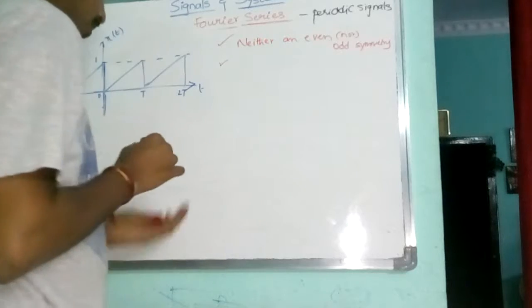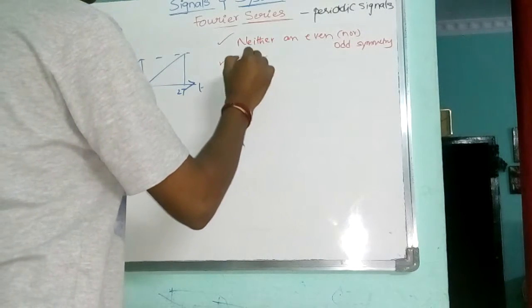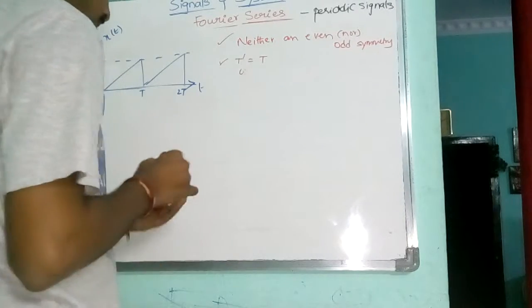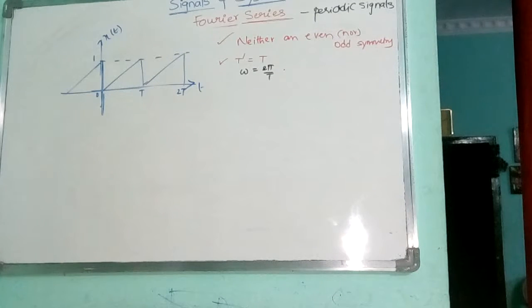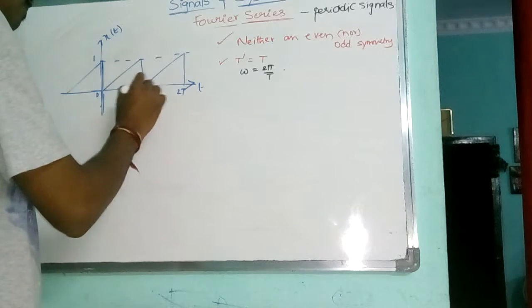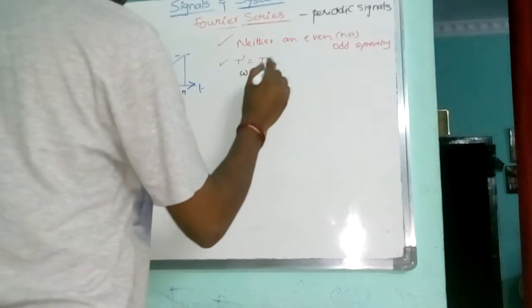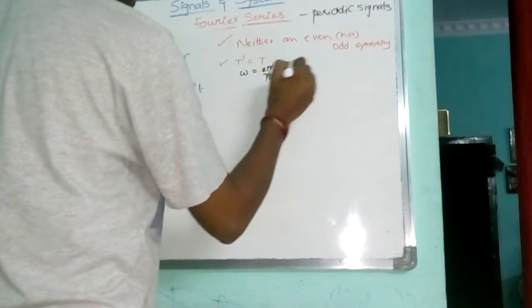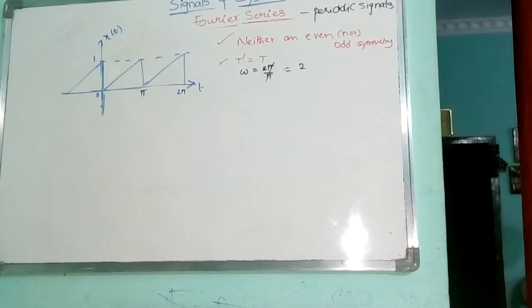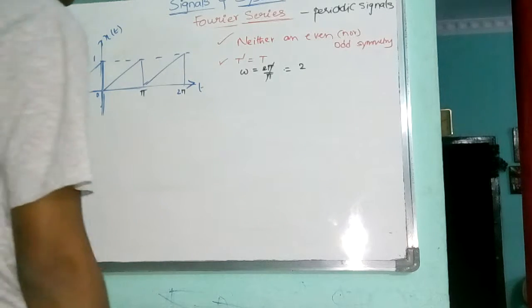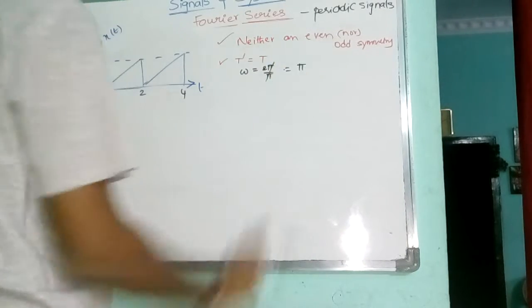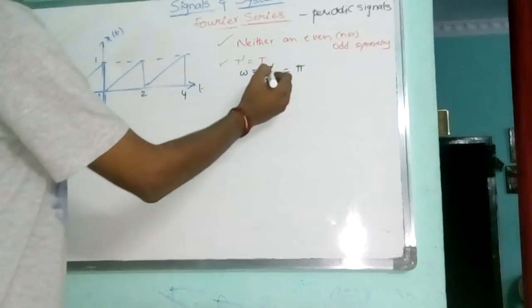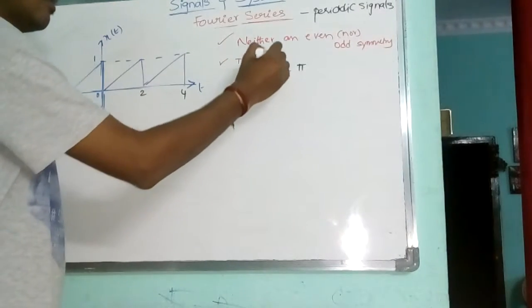We need to find each and every term. Next, we need to go for the coefficient or time period. So, what is the time period here? It is T. I will take it as T. What is omega? Omega is 2 pi by T. Now, for easy solving, since omega is 2 pi by T, my time period is taken as 2. Omega will be pi.